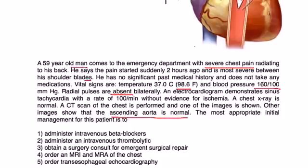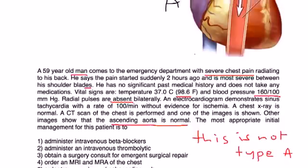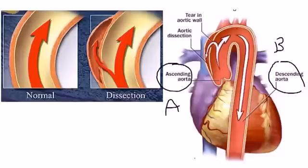Other images show that the ascending aorta is normal. The most appropriate initial management is. Okay, if the ascending aorta is normal, that means this is not type A. So what they're saying is that this part, this ascending aorta here, is normal.